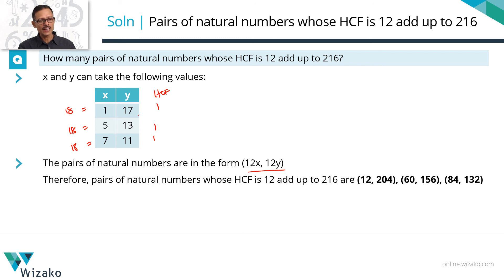So 12 into 1 and 12 into 17, that's this set. 12 into 5, 12 into 13, that's this one. 12 into 7 and 12 times 11, that is this.